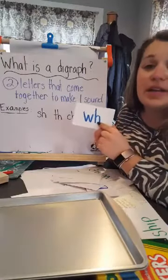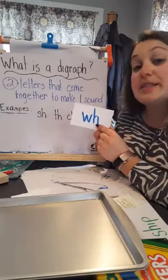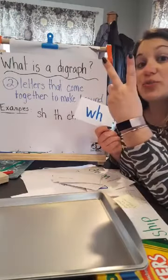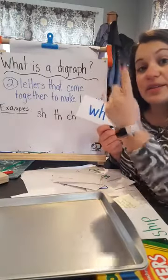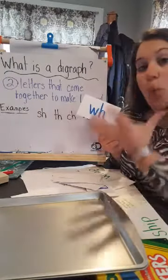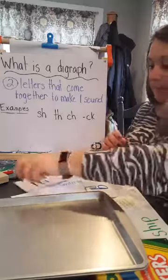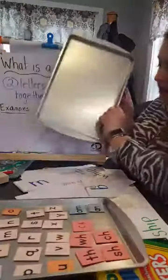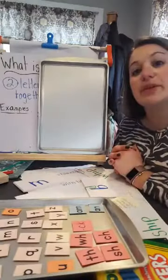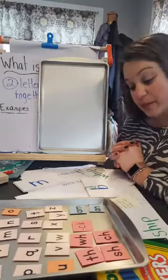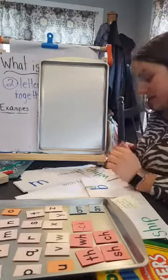This is another example of a digraph that I hadn't written up there. This is another example because it's two letters that come together to make one sound. W. All right, we're going to move to our next part today. So today we're going to be building some words. The words that we're going to be building today, some of them will have digraphs. Okay?